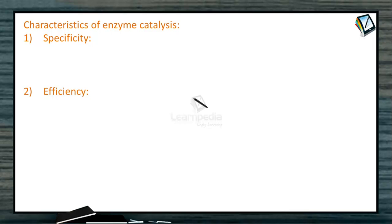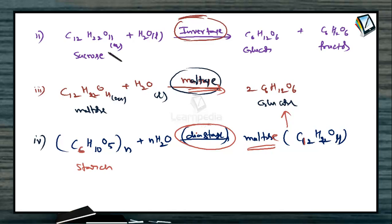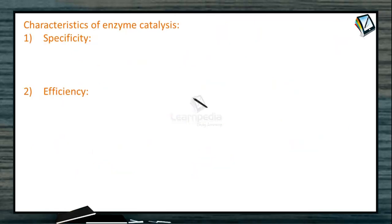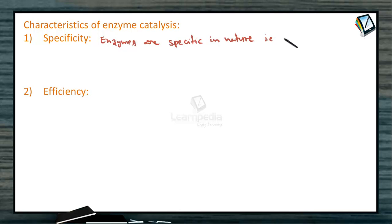What are the characteristics that an enzyme should have to act as a catalyst? The first one is specificity. Enzymes are highly specific in nature, meaning a particular enzyme is used for a particular reaction only. For example, invertase is used for the hydrolysis of sucrose, maltase for the hydrolysis of maltose, and diastase for the hydrolysis of starch.